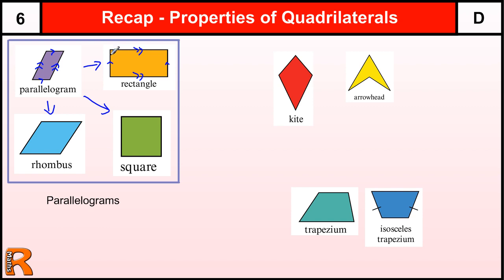A rectangle is a parallelogram where the corners are right angles. Most students think a rectangle must have two pairs of sides of different lengths, but that's not true. All a rectangle is is a parallelogram with right-angle corners. All a rhombus is is a parallelogram where all the sides are the same length.